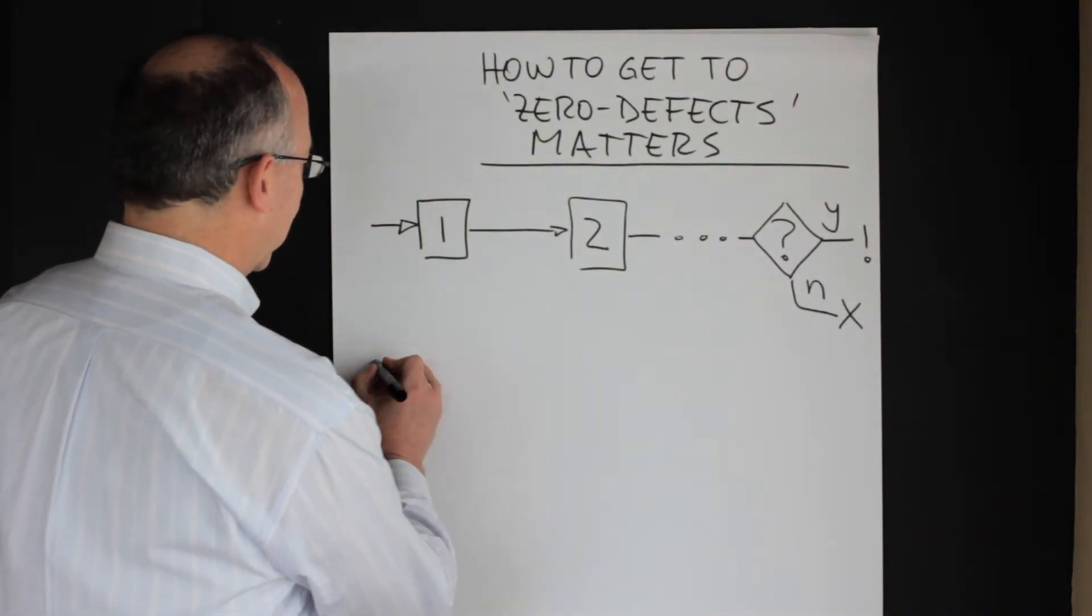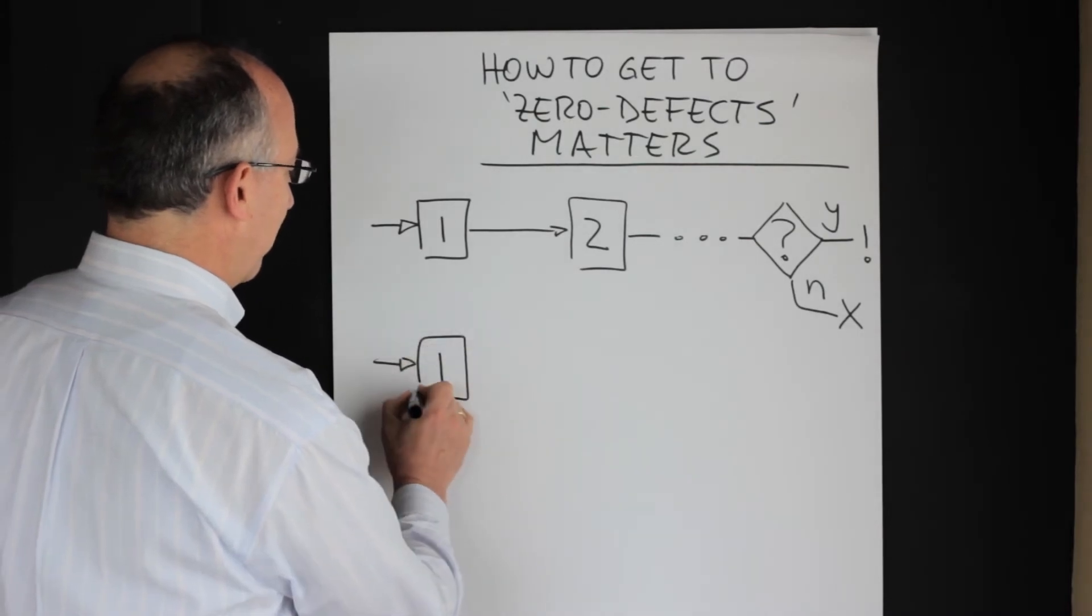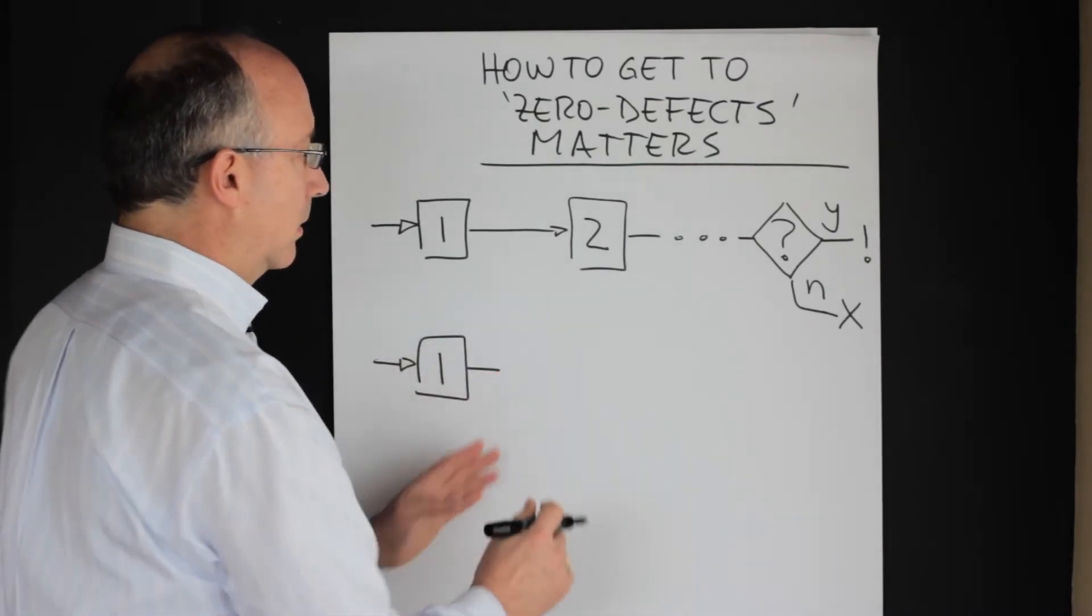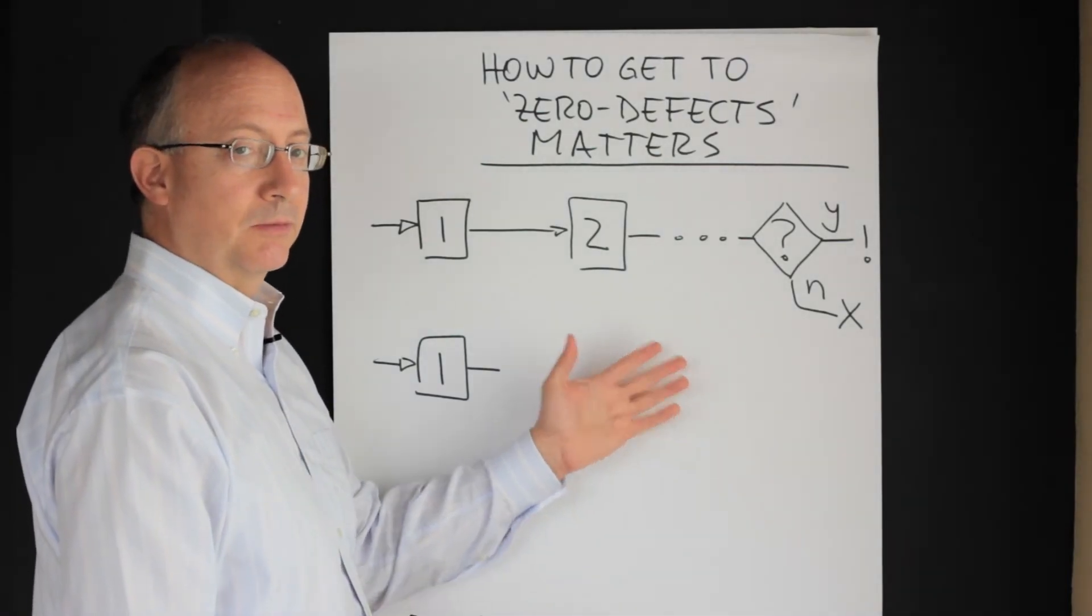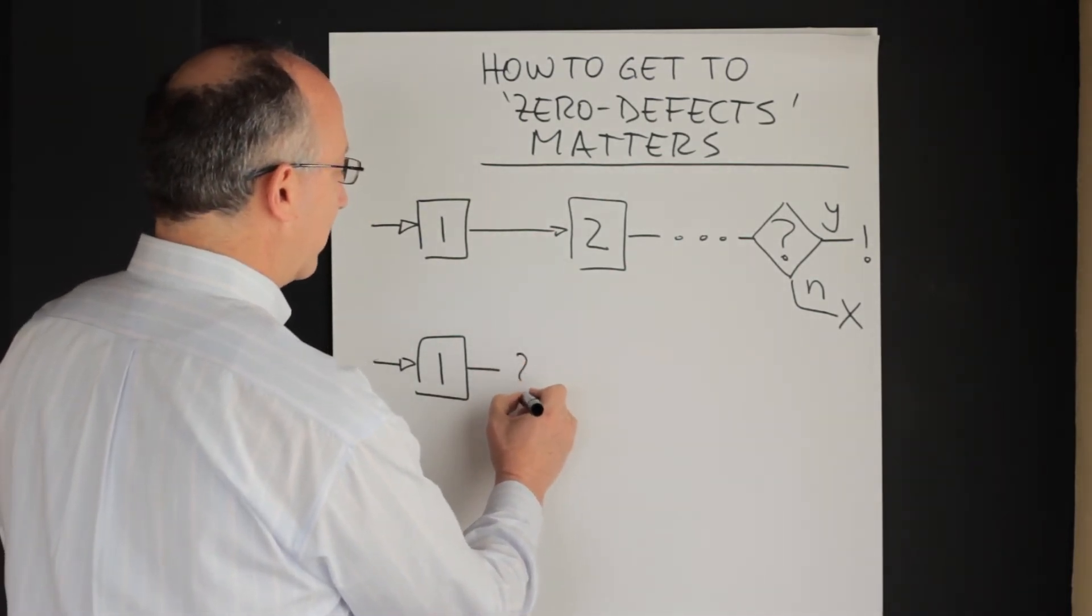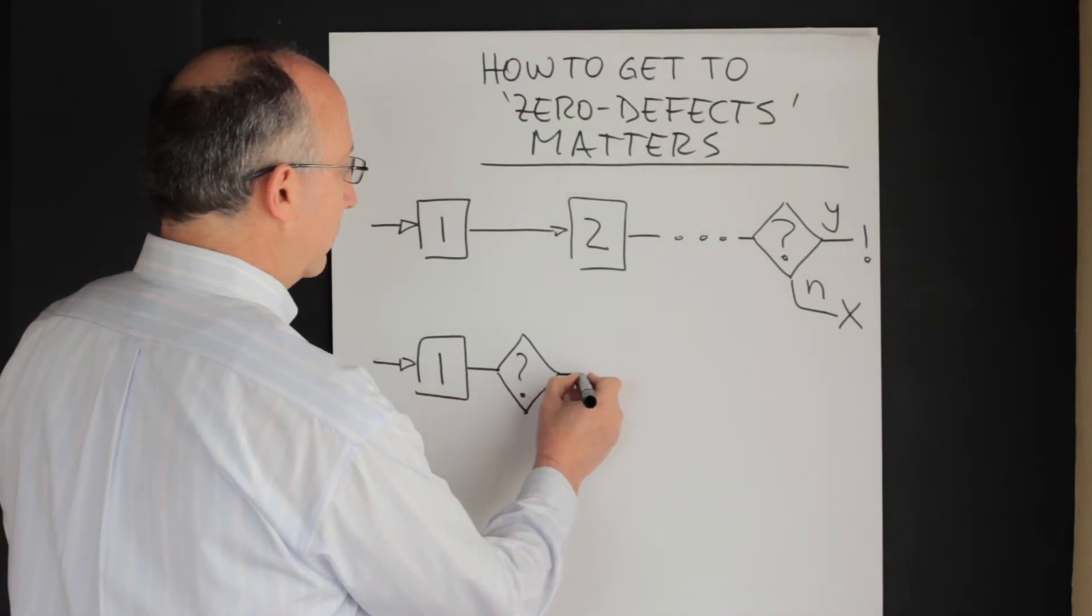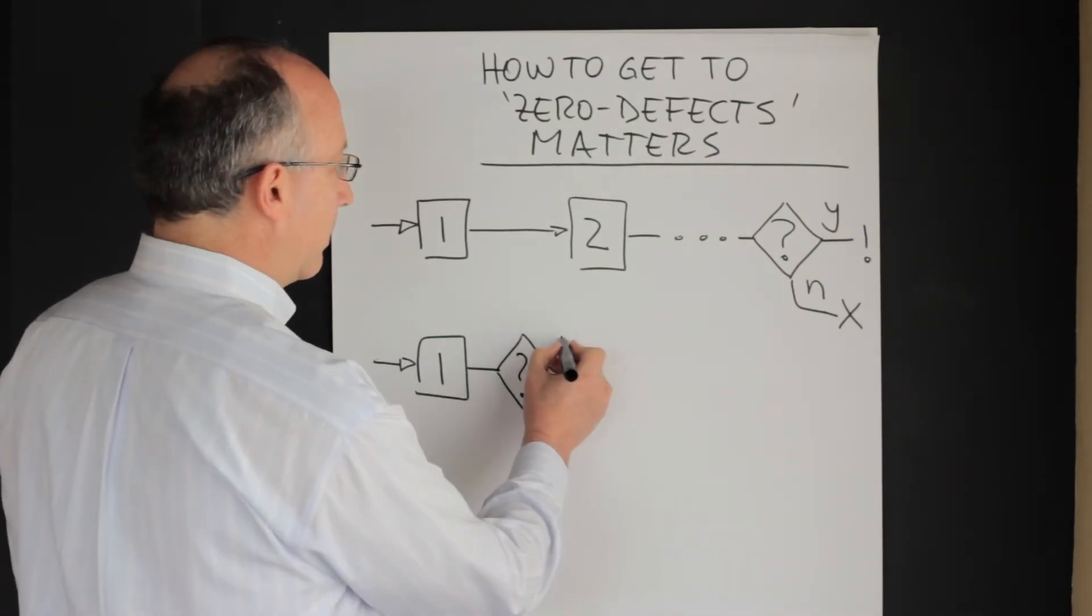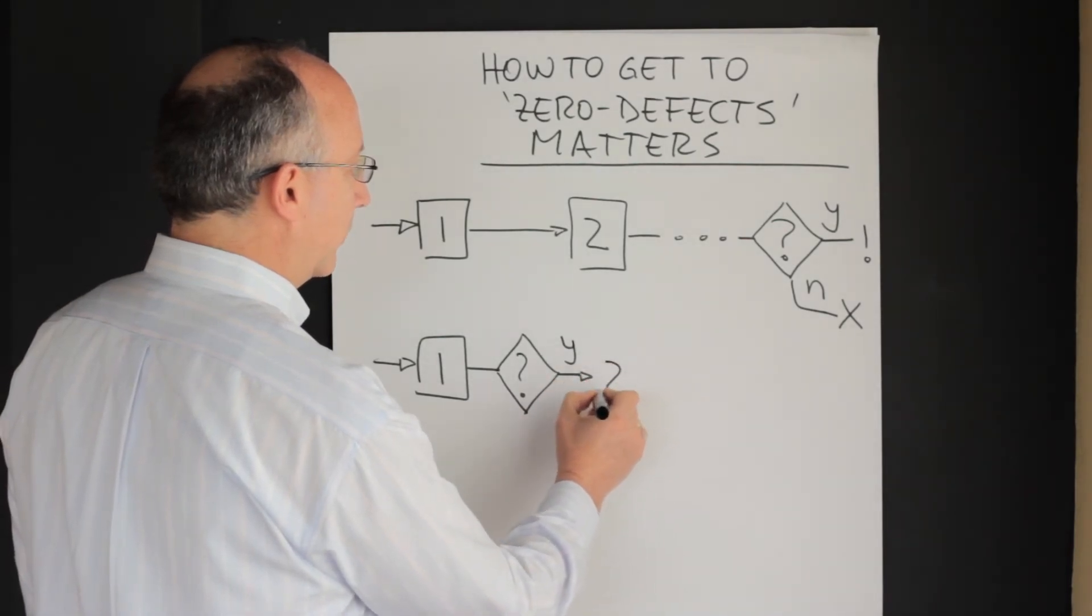How this would look like is as follows. Now you will have a process just like we had before, step number one over here, but before you move on to the next one then you will actually have an inspection point at this moment and so this test will happen over here. Again there will be two possible ways. Either you pass the test and now in this case you will then proceed on to the second step.